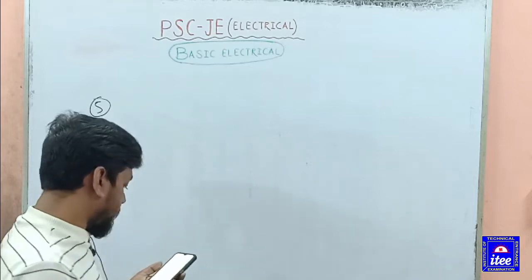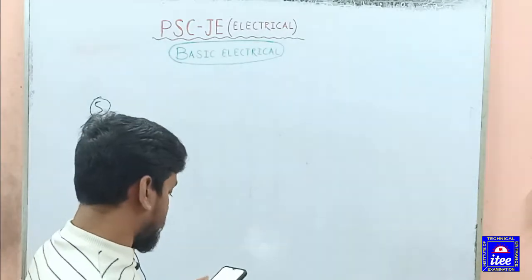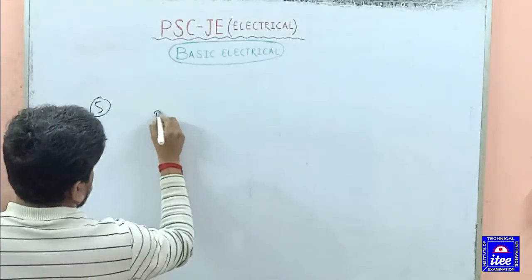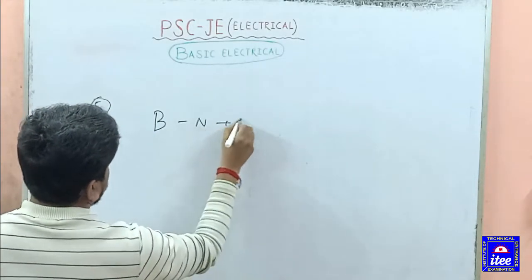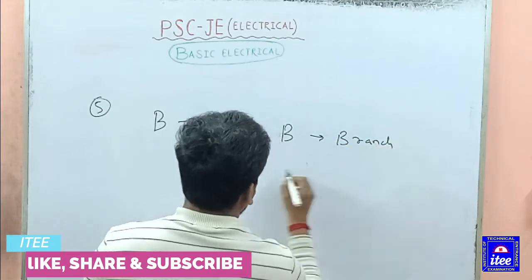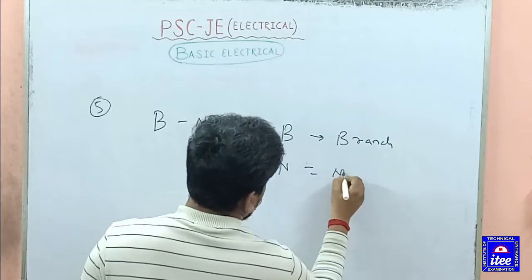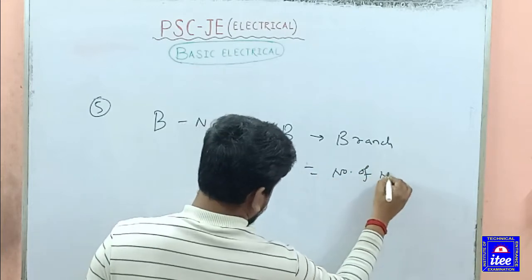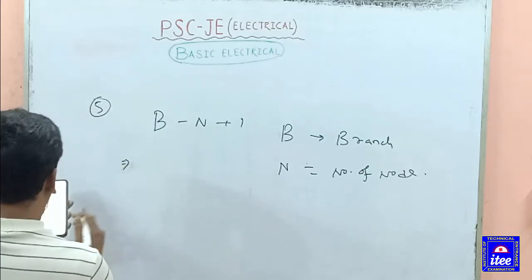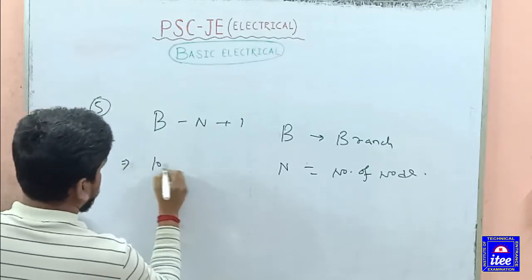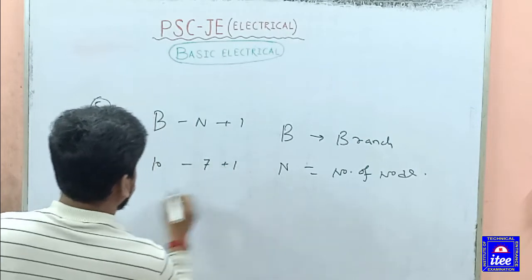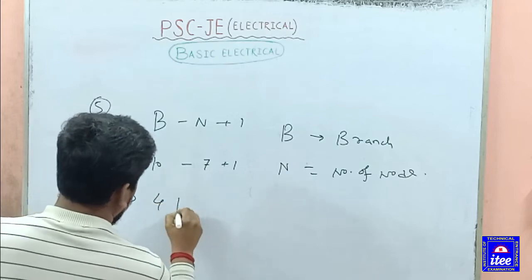Next question: an electric circuit with 10 branches and 7 nodes — who will use loop integration? We have the loop equation: b minus n plus 1, where b is the number of branches and n is the number of nodes. For you, branch chain load.